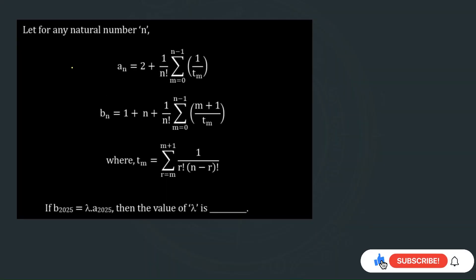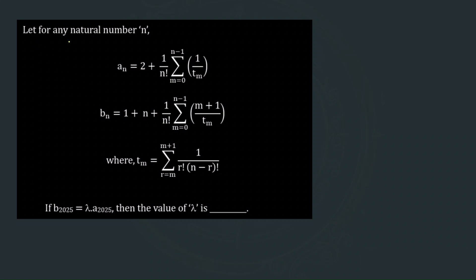So let us start the discussion. It says: let for any natural number n, aₙ is defined like this, and bₙ is defined like this, and tₘ is defined like this. If b₂₀₂₅ equals λ times a₂₀₂₅, then the value of λ is asked.